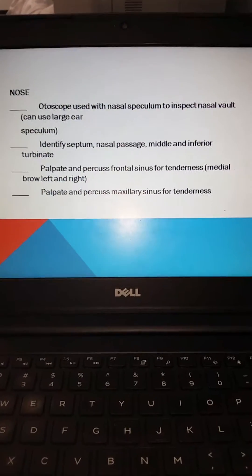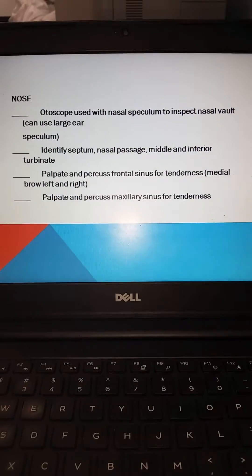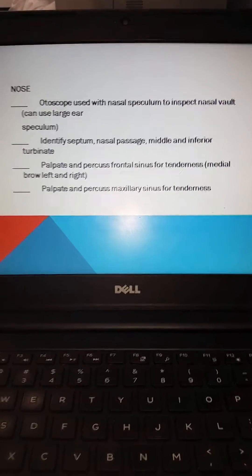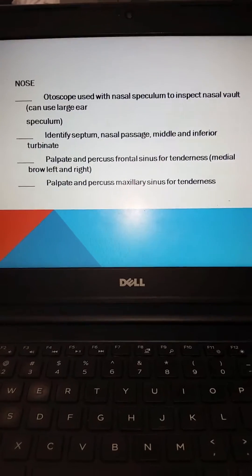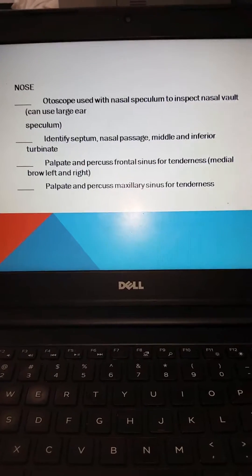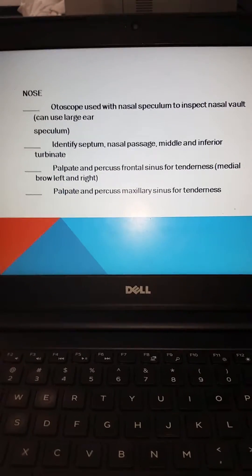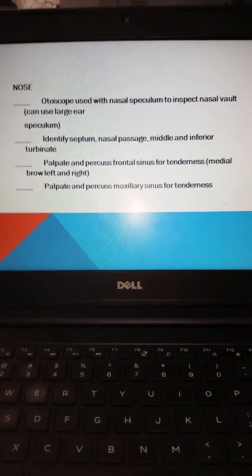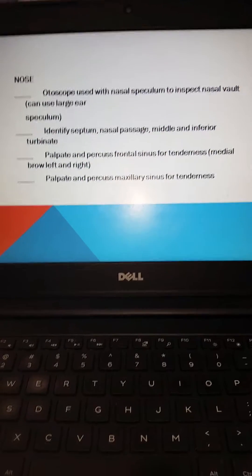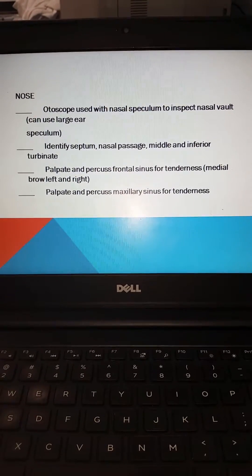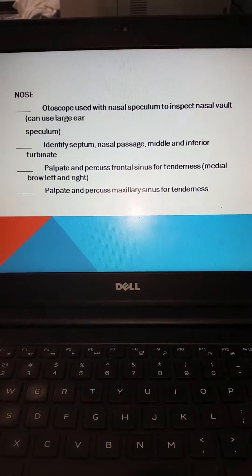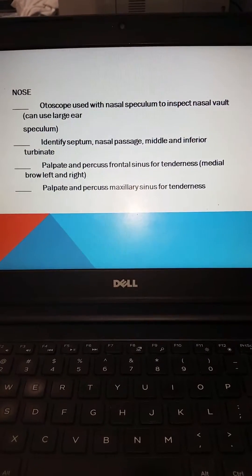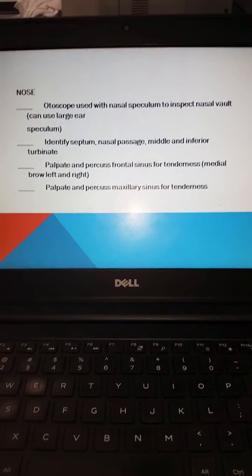Use the otoscope with the nasal speculum to inspect the nasal vault. Use a large ear speculum. Identify the nasal septum, nasal passage, and the middle and inferior turbinates.